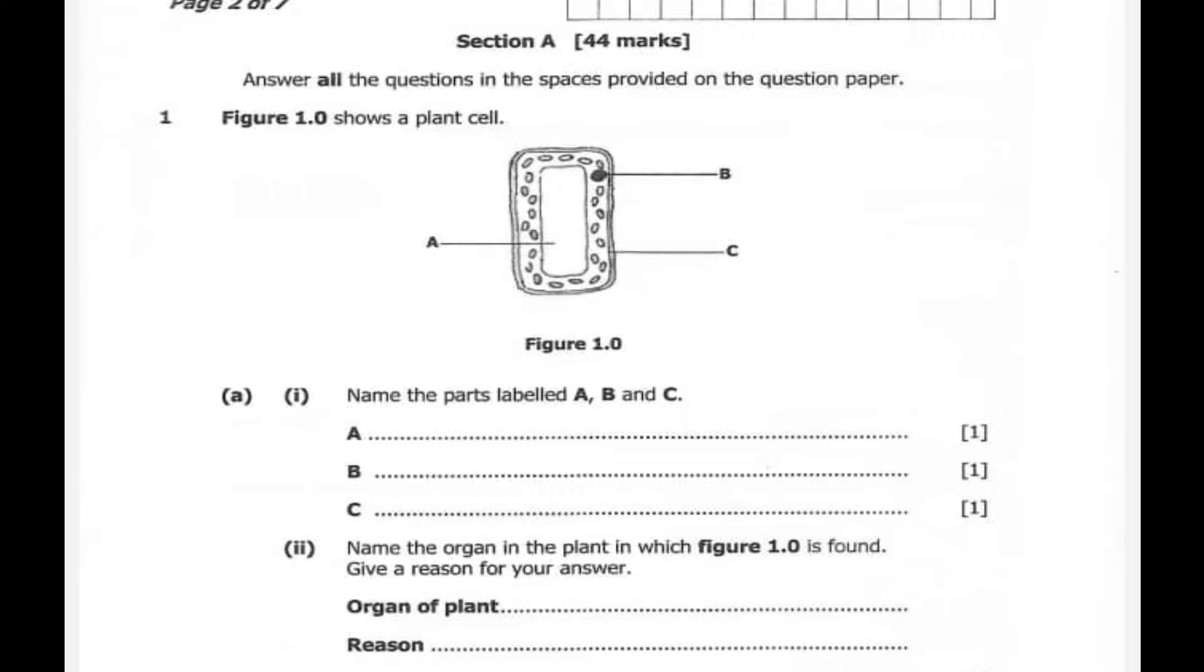Question 1a. Name the parts labeled A, B, and C. So A here is a vacuole while B is a nucleus. C is a cell membrane.